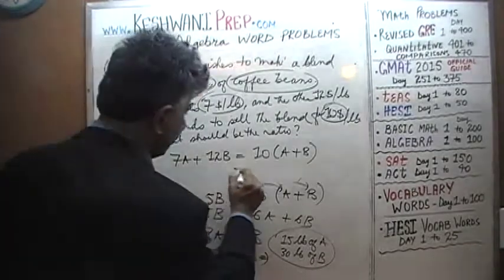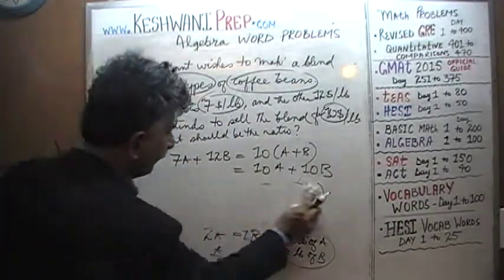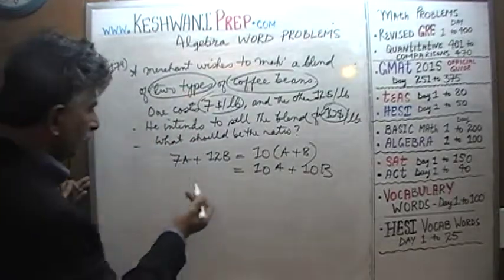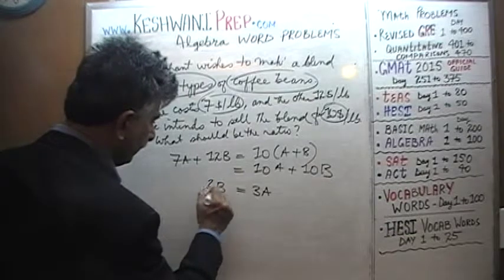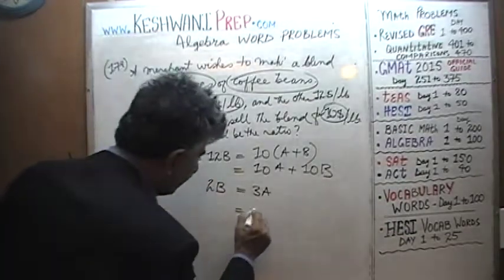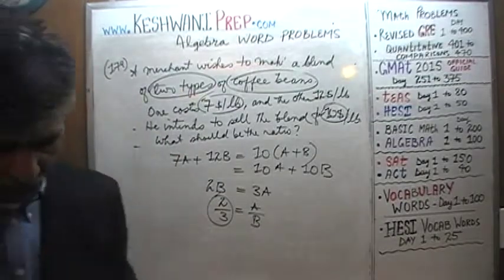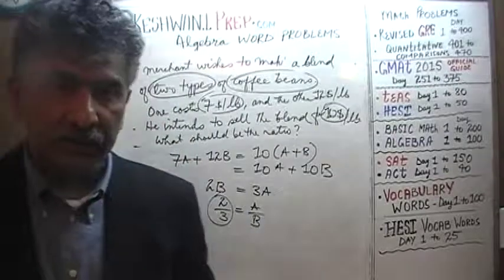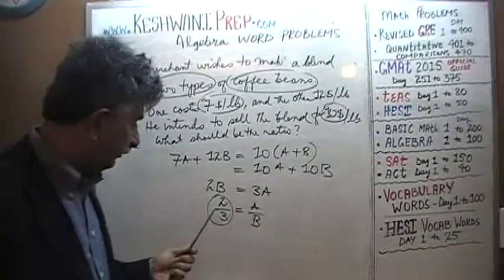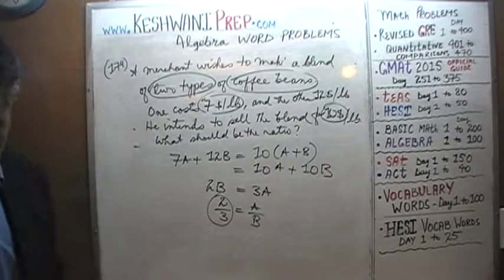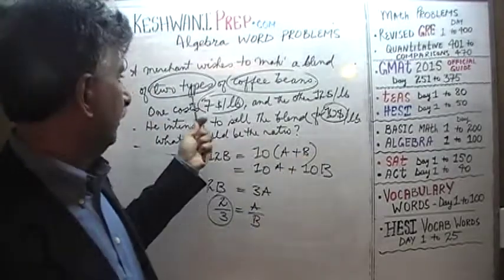Opening the parenthesis: 10A + 10B. Bringing all A's to one side and B's to the other: 12B − 10B = 10A − 7A, which gives 2B = 3A. Therefore A/B = 2/3. The answer is that he should blend the two beans in a ratio of 2 to 3. For every 2 pounds of the first type of coffee bean he uses, he must mix it with 3 pounds of the second type, and the blend can be sold at $10 per pound.